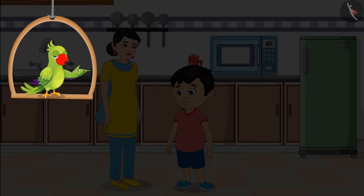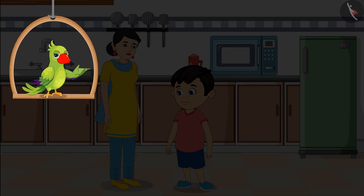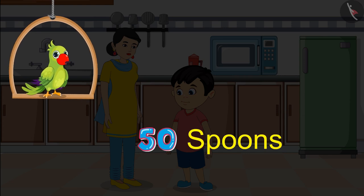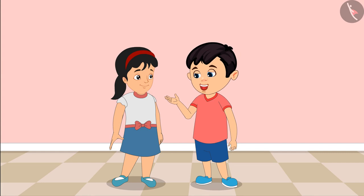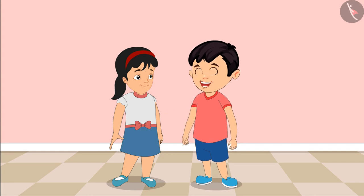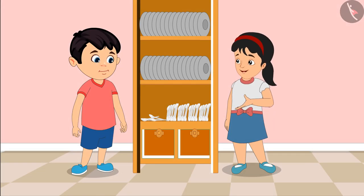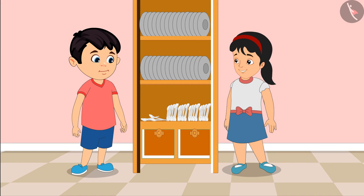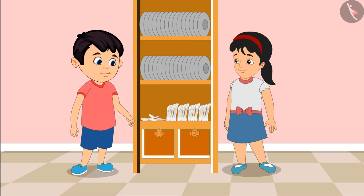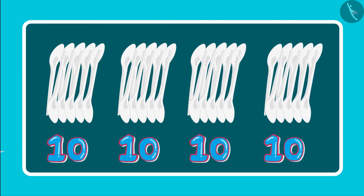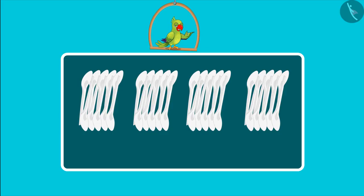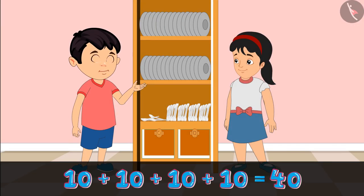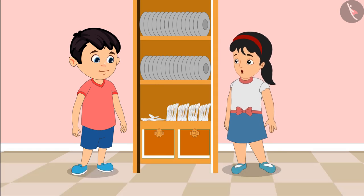Today, a lot of guests are expected to visit Chotu's home. Chotu's mother has sent Chotu to get 50 spoons from the Almira. Pinky, let us go and get spoons for guests from the Almira. Chotu, it will take a lot of time to count 50 spoons. No, Pinky. See, these are 4 groups of 10 spoons each. Children, can you tell how many spoons have Chotu and Pinky found? Right now, we have got 4 groups of 10 spoons each, so these are 40 spoons.